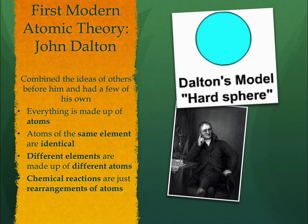Dalton told us that everything is made up of atoms. Atoms of the same element are identical — so all carbon atoms are like all other carbon atoms, and all hydrogen atoms are like all other hydrogen atoms. He also told us that elements are different because their atoms are different, meaning a hydrogen atom would be different than a nitrogen atom, which would be different than a lead atom.